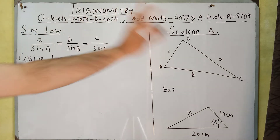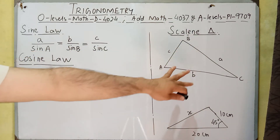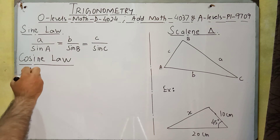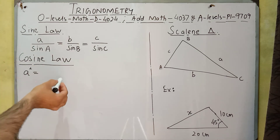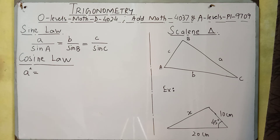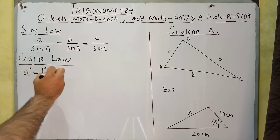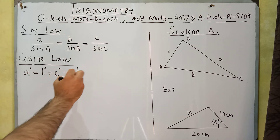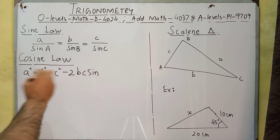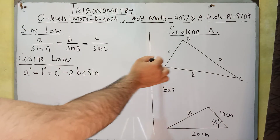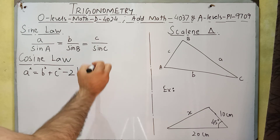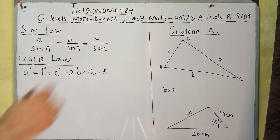We can start the cosine law from any side. Starting from side a: a² equals b² plus c² minus 2bc times cos of the angle between b and c, which is angle A.